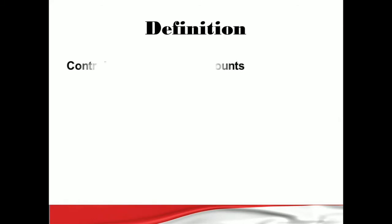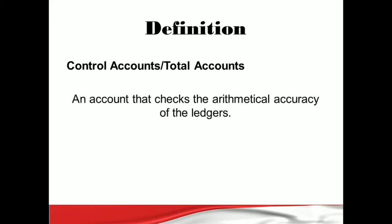Before we go into the objectives, we need to know what a control account is. A control account is also referred to as a total account — an alternative term — because the concept is that you're pulling the totals relating to particular items to prepare your control account. The control account is an account that checks the arithmetical accuracy of the ledgers, similar to preparing a trial balance of the ledgers.